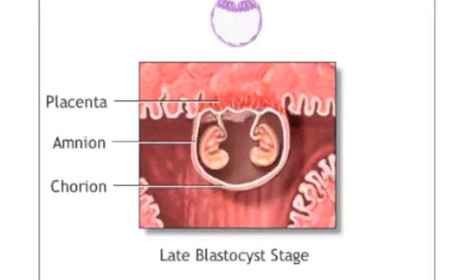Having the same amnion, chorion, and placenta gives more accuracy in the identical twins.